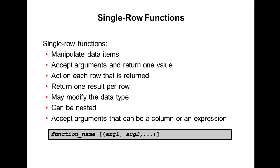The features of single row functions are: they are used to manipulate data items, they accept arguments and return only one value, and they act on each row that is returned. They possibly return a data value of a different type than the one referenced. They can accept one or more arguments and can be used in the SELECT clause, WHERE clause, ORDER BY clause, and they can also be nested.